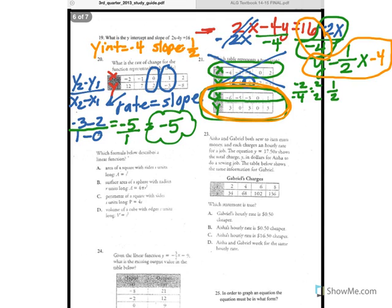Now if you look at number 22, it says which formula below describes a linear function? A is not linear, because it has an exponent. B is not linear, because it has an exponent. And D is not linear, because it has an exponent. The only one that is linear is answer C, because it does not have an exponent.